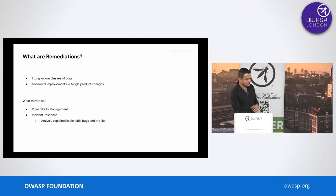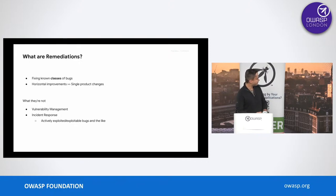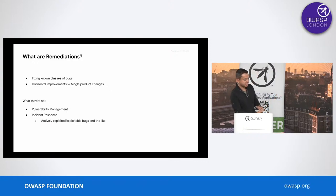What are remediations? This is a bit of an overloaded term in the industry. Here, we are mostly talking about fixing classes of bugs rather than individual instances of bugs. And that's the only way it can scale at Google because there are multiple products, lots of services, hundreds of APIs, tens of thousands of developers. So whenever possible, we try to do horizontal improvements that fix bugs in multiple products rather than chasing individual teams to do changes in their product.